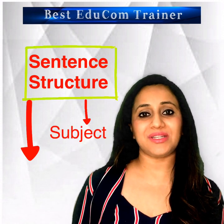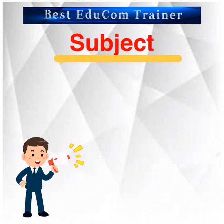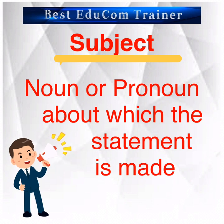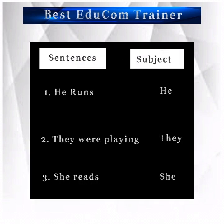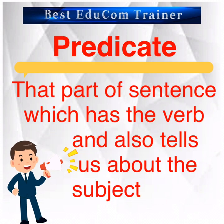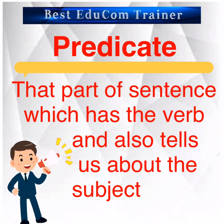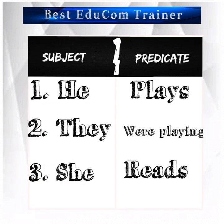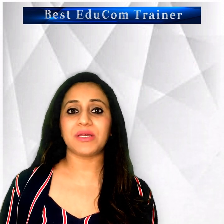A sentence consists of a subject and a predicate. What is a subject? A subject is a noun or pronoun about which the statement is made. So let's add a subject to our one-word sentences: He runs. They were playing. She reads. A predicate is a part of the sentence which has the verb and tells us what the subject is or does. The predicate consists of two parts — verb and object. The verb can be in any form: present, past, or future; simple or continuous.